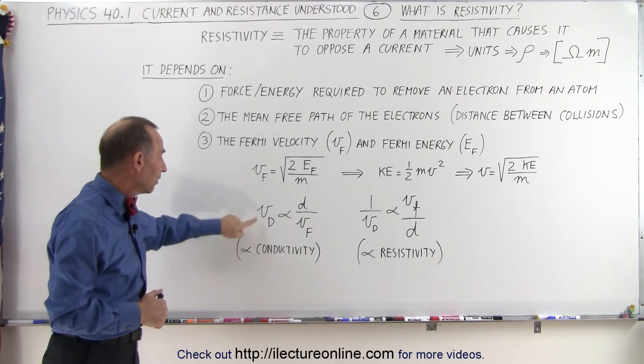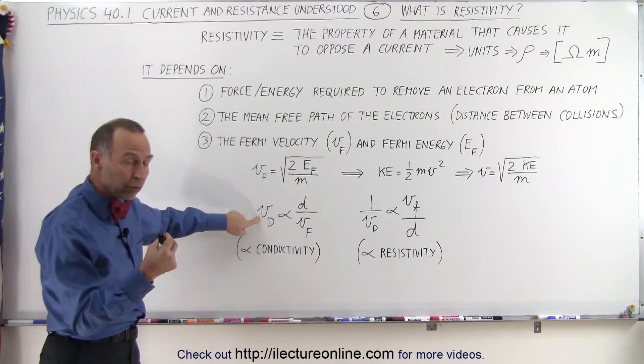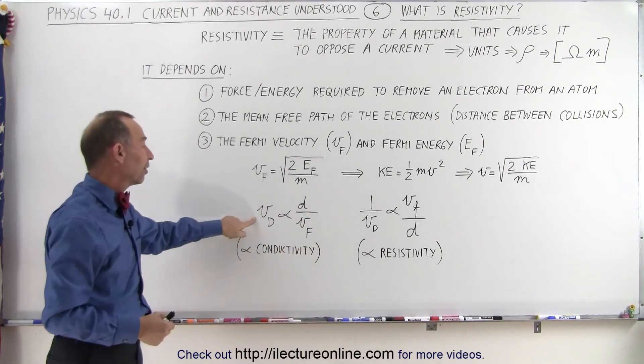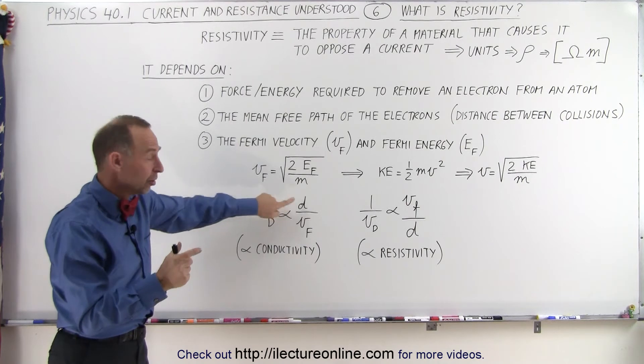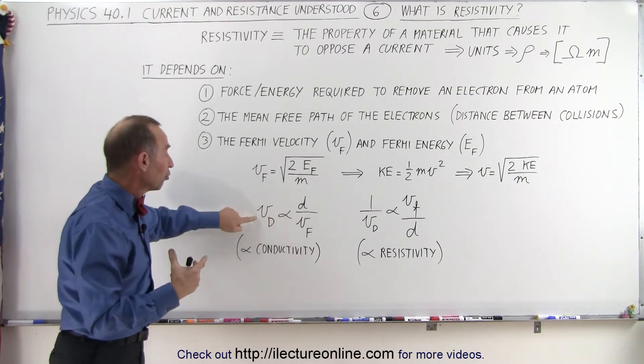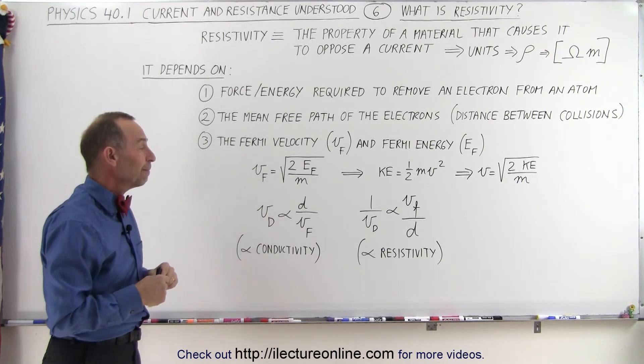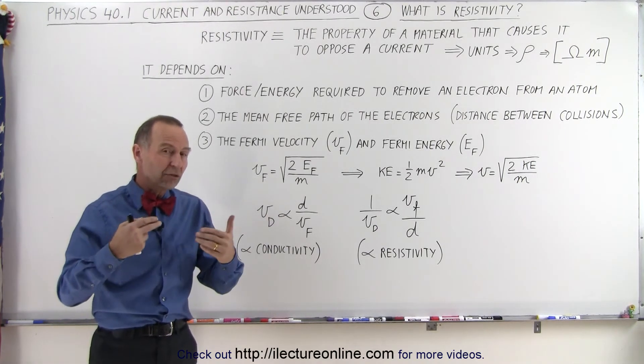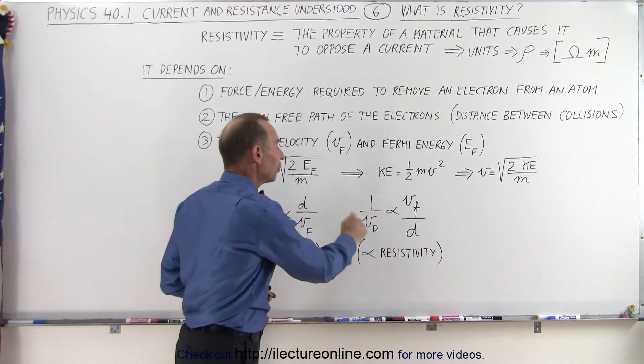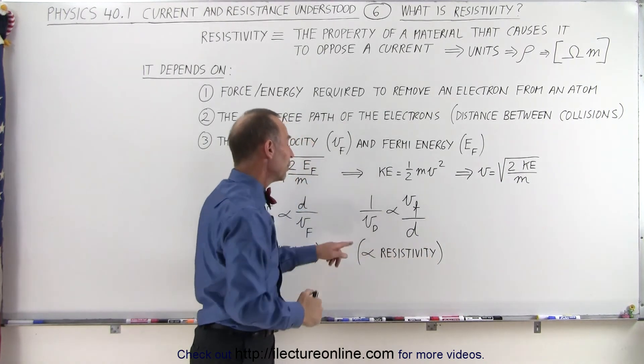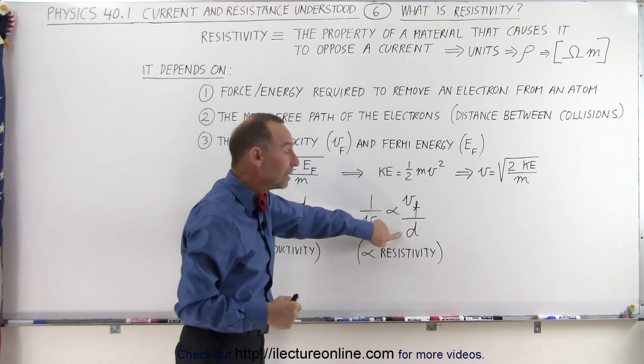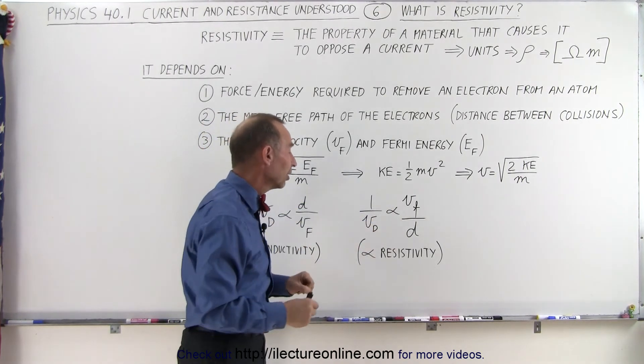But here you can see that since the drift velocity is proportional to the conductivity, the freedom of the charges to move through the circuit, you can say that the greater the distance between collisions, the greater the conductivity, and the greater the Fermi velocity, the smaller the conductivity, or the smaller the drift velocity. If we now want to look at the concept of resistivity, we can see that if we take the inverse of that, 1 over the drift velocity is proportional to the resistivity. We can see resistivity increases with increased Fermi velocity and decreases with an increased distance between collisions.